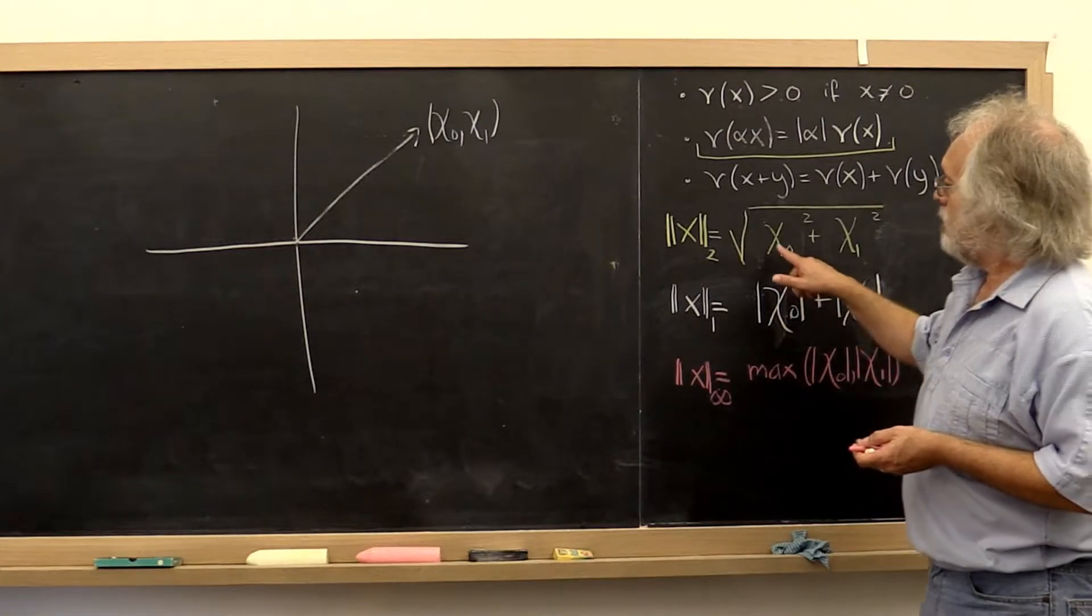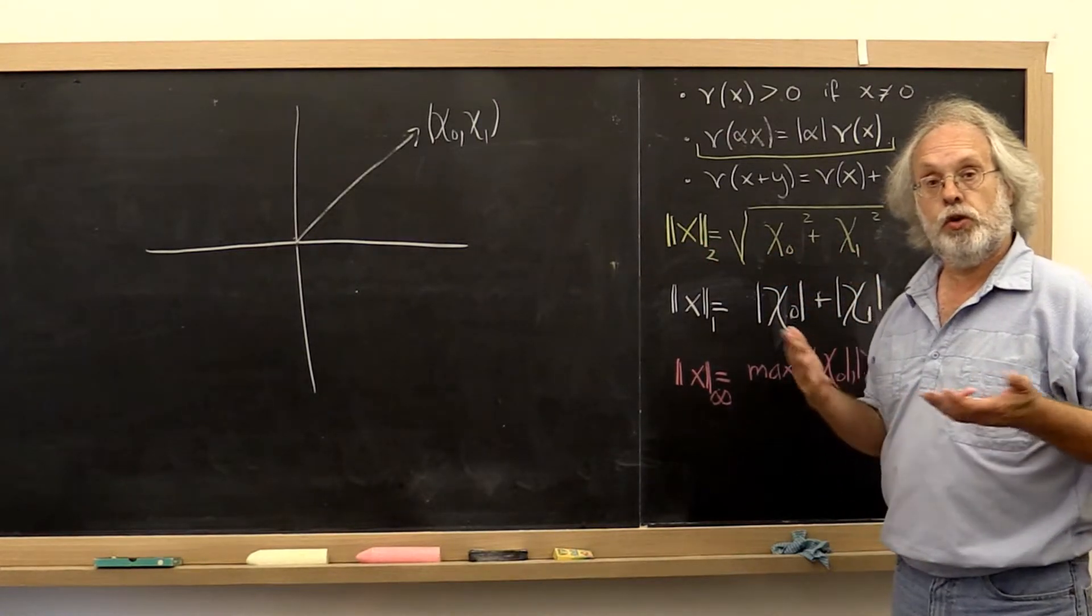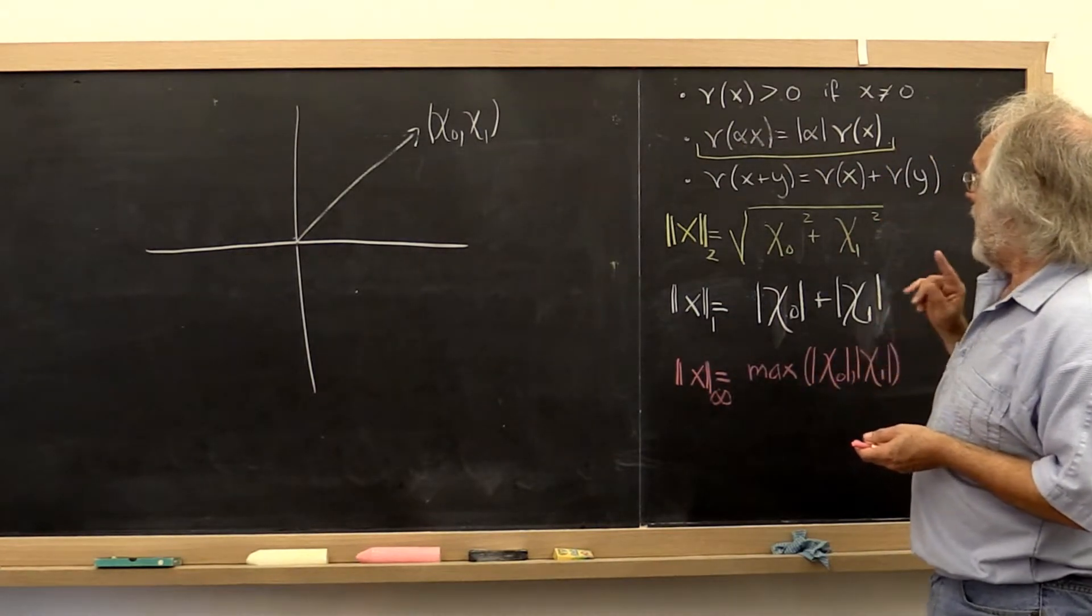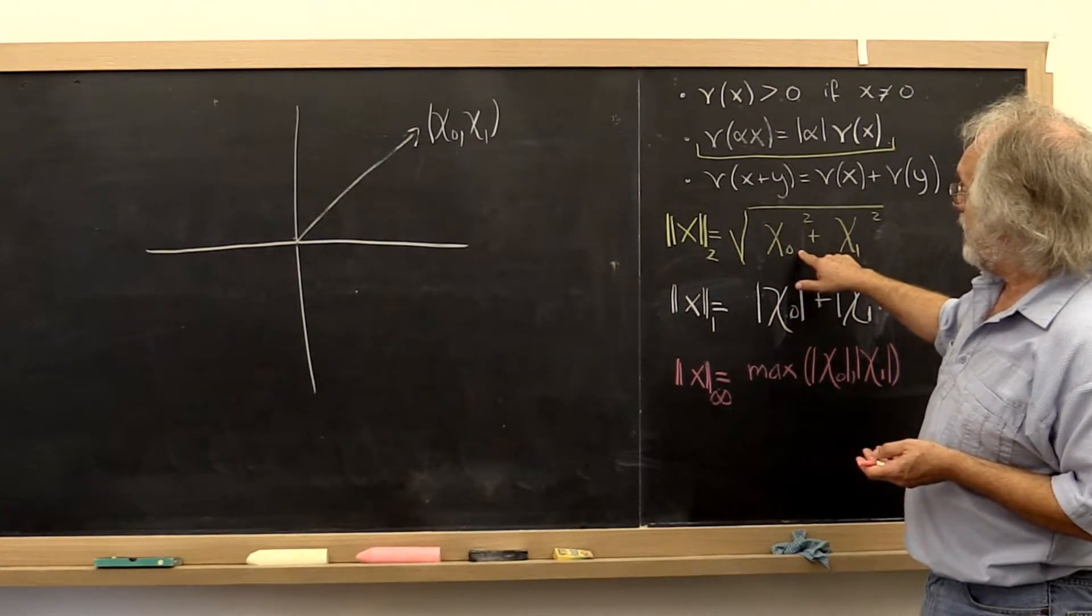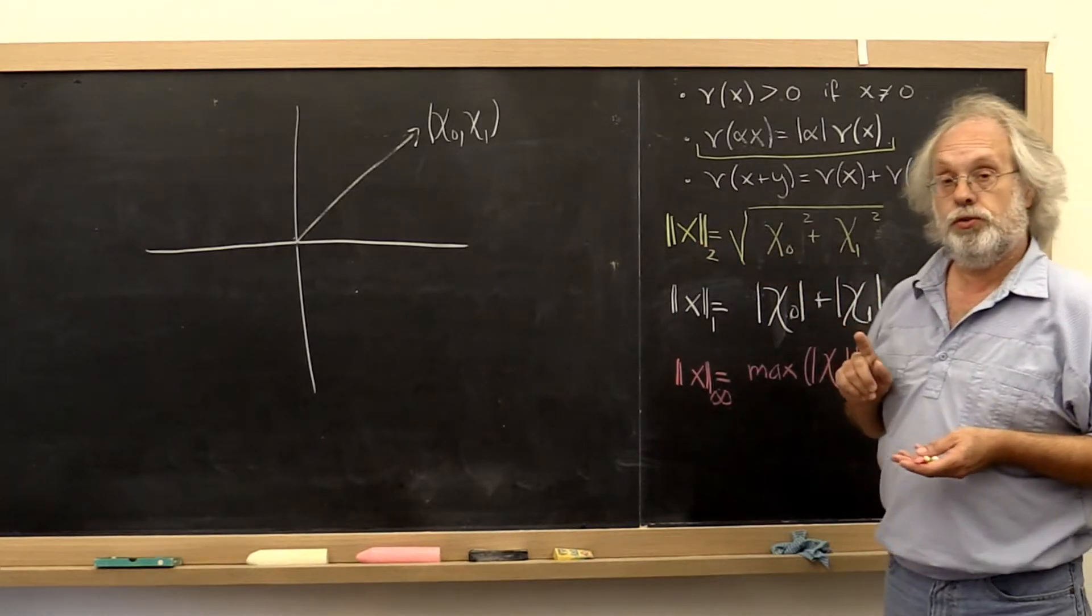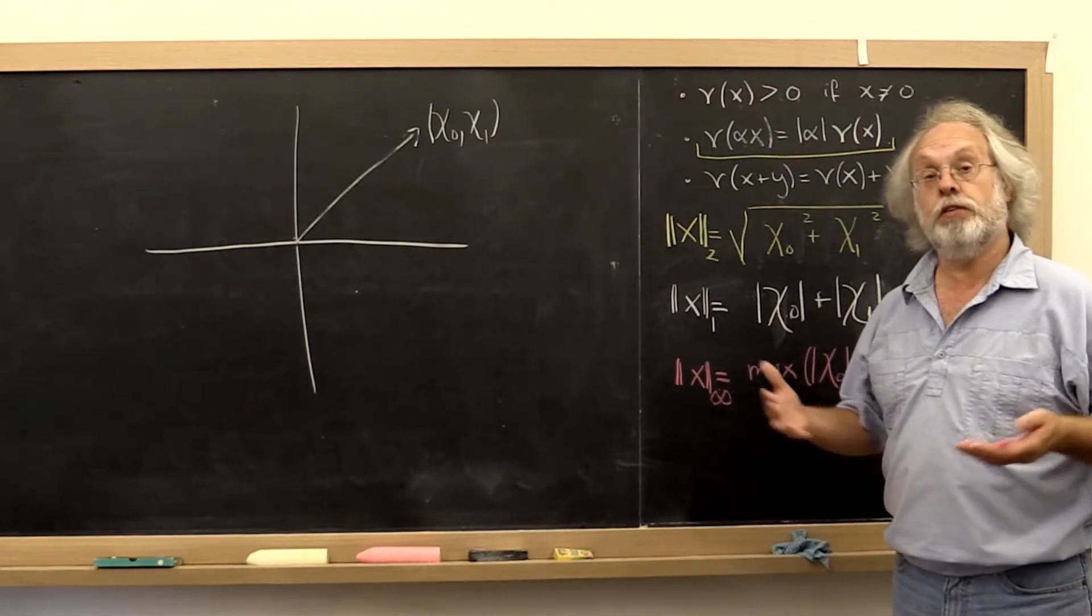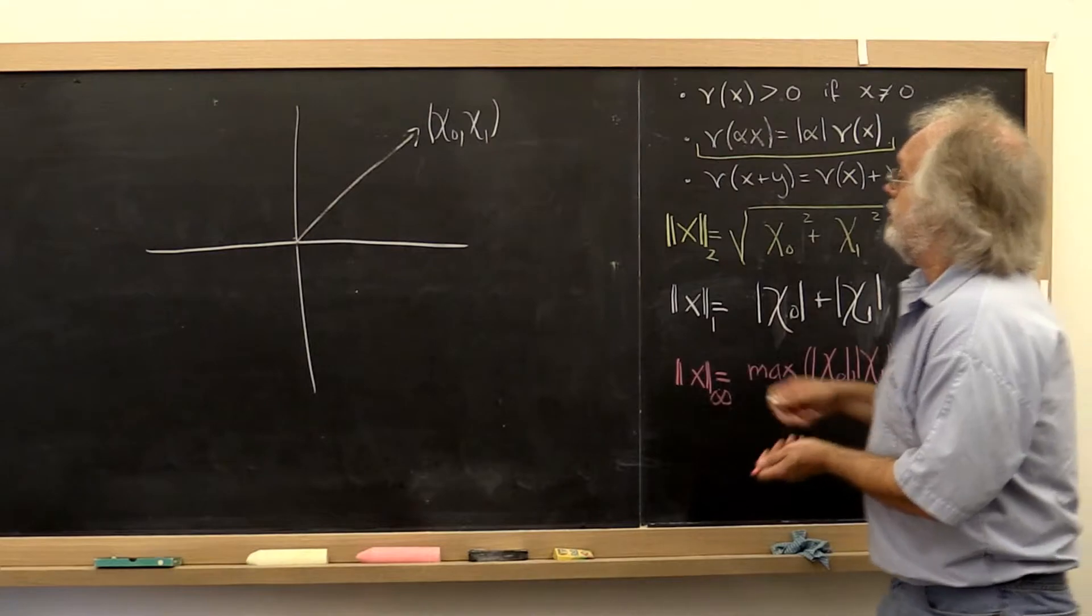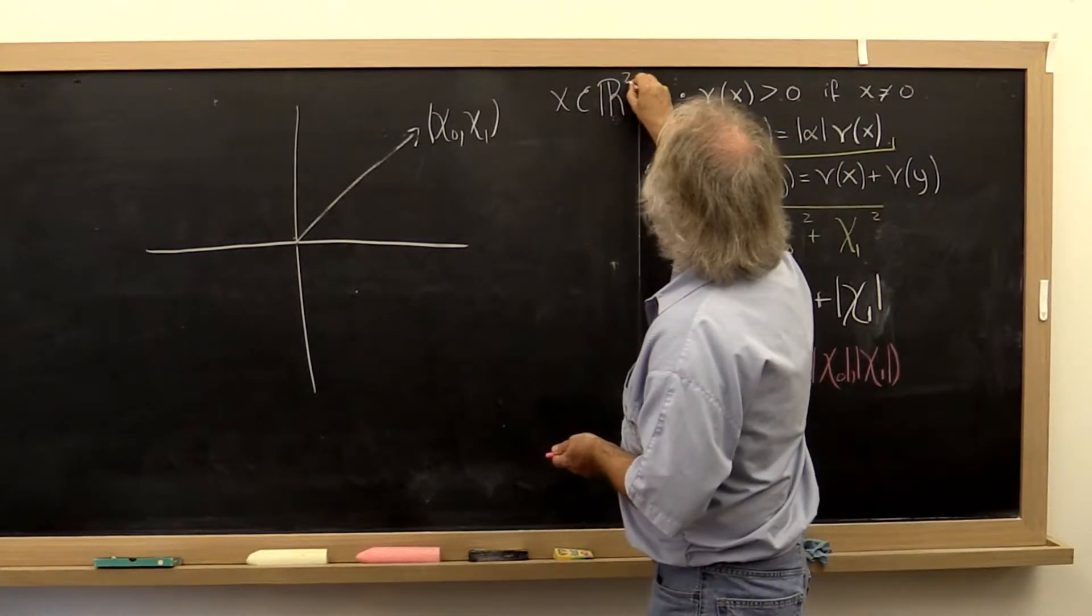And here I'm looking only at vectors with two components. So we're going to look at two-dimensional space. And if you look carefully, you'll also notice that I left the absolute value off of the components for the two-norm. And that's because I'm only going to be looking at real valued vectors. So all of our vectors are going to be in R2.